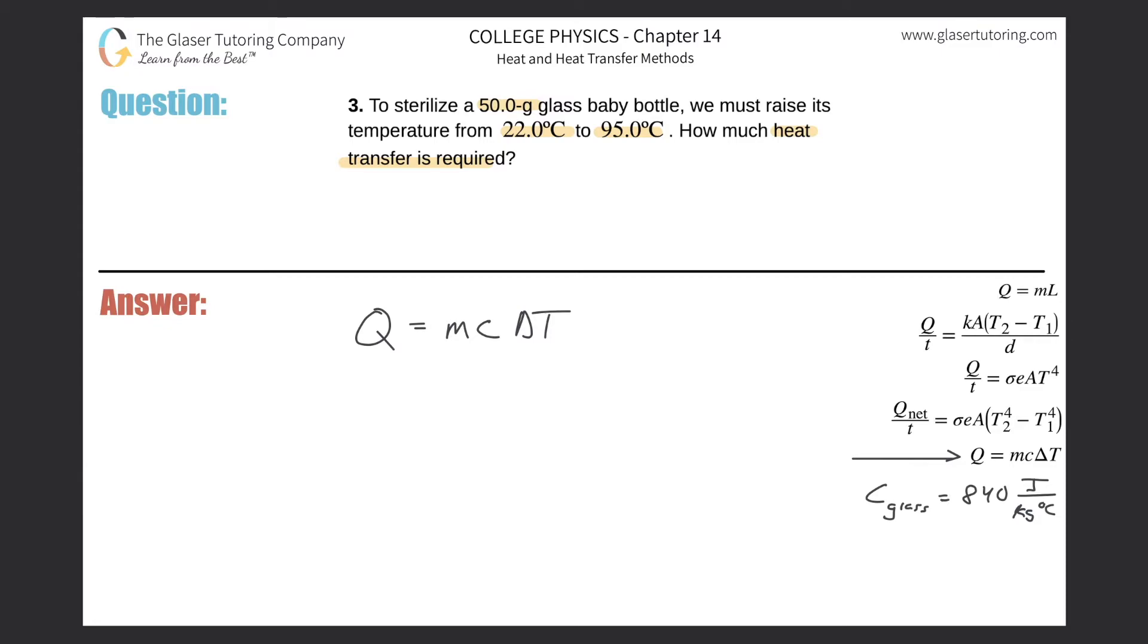So in order to solve for Q, I got to know all those other three variables. They tell us the mass of the bottle is 50 grams, but we should probably convert that into kilograms just to get it out of the way. So you know that there's a thousand grams in one kilogram, so that works out to be 0.500 kilograms.